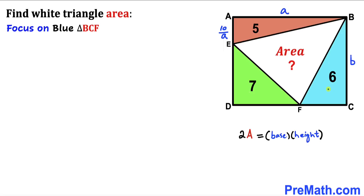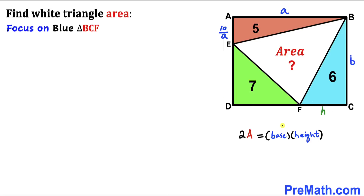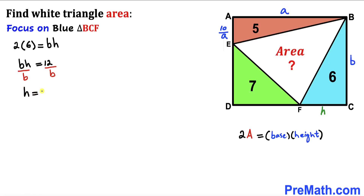Next, let's focus on the blue triangle BCF, whose base is lowercase b and area is 6. Filling in the formula: 2 × 6 = b × h. Dividing both sides by b, our height h turns out to be 12 divided by b.